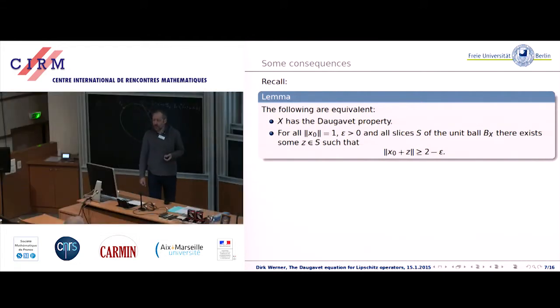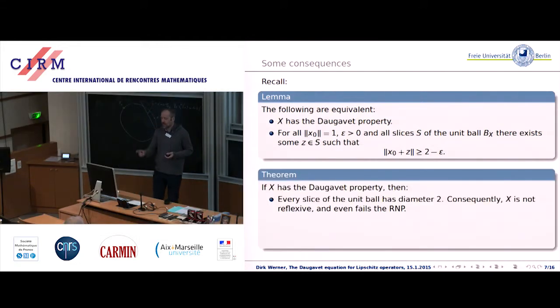What can you deduce from all that? Here again is the characterization that I've shown you. Obviously, if you do not start from x0 but its negative, then you're talking about the distance of the two points. You see that every slice has diameter 2, which means that such a space can certainly not be reflexive and cannot even have the Radon-Nikodym property. So, in a certain extreme way, it is a non-Radon-Nikodym space.